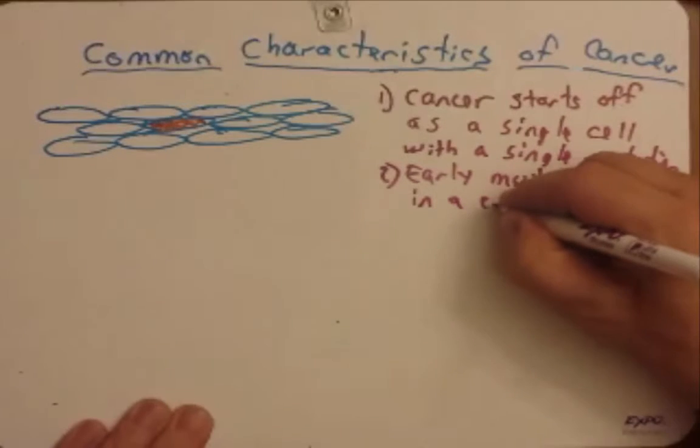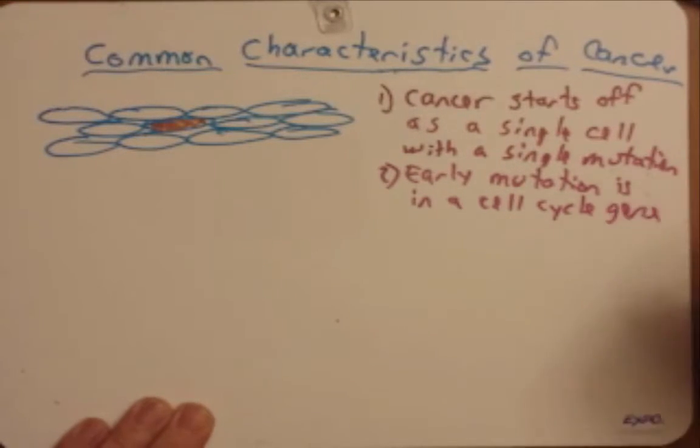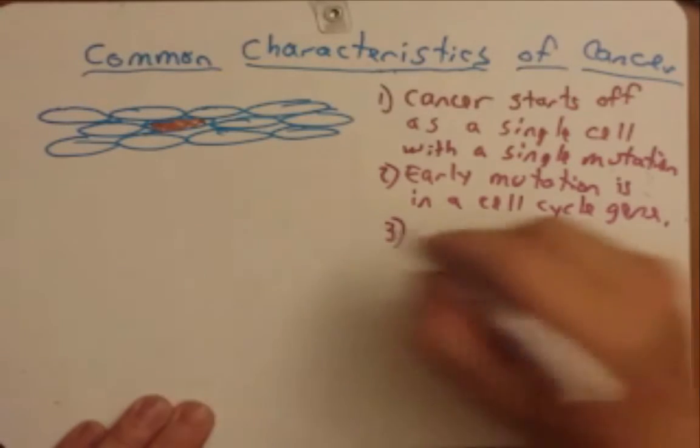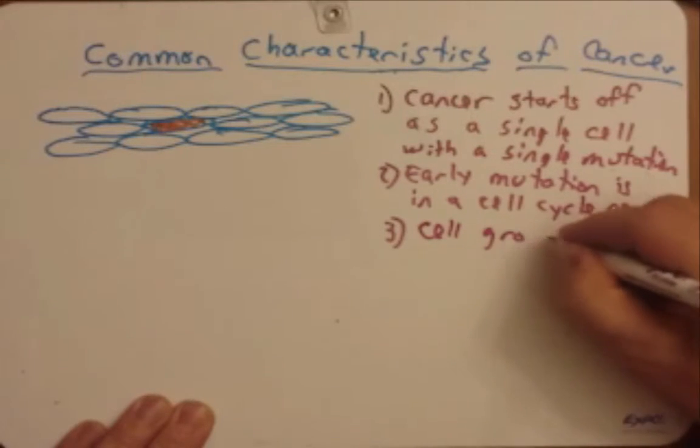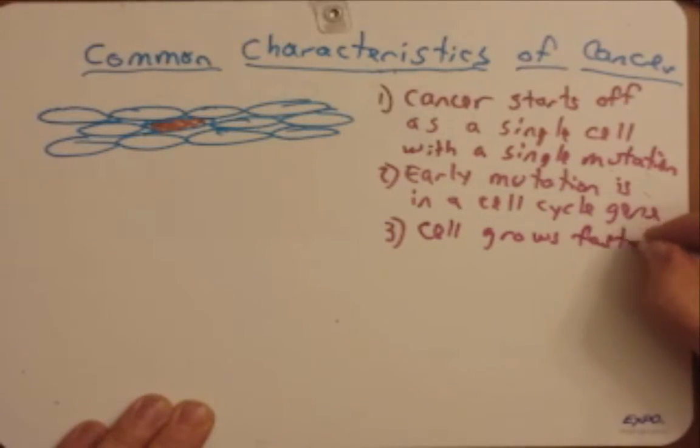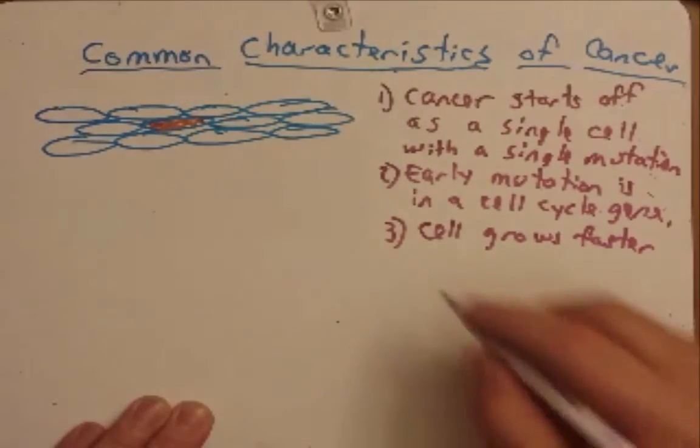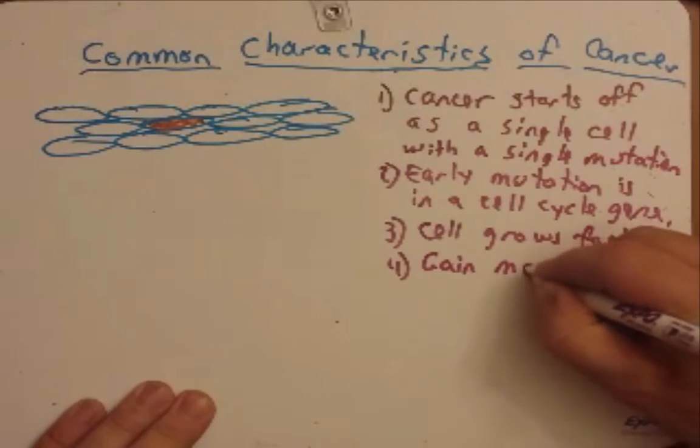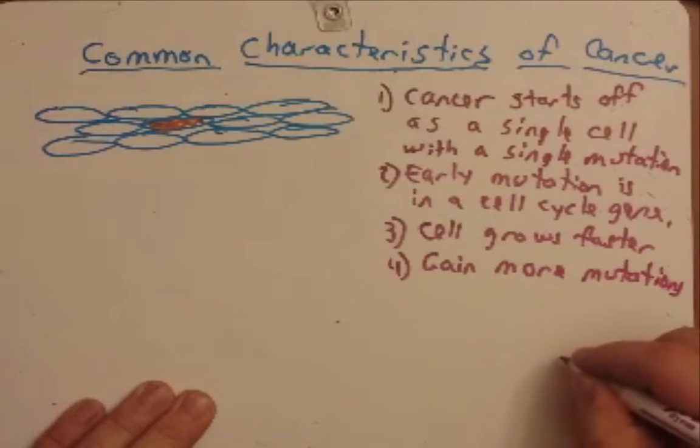is in a cell cycle gene, meaning a gene that regulates the cell cycle. Because of that, this single mutation in this single cell will allow the cell to grow faster. It grows faster in relation to its neighboring cells that it once was like. And because of that, it's going to start to gain more mutations.